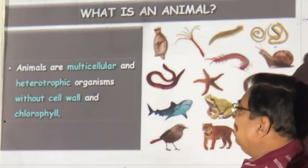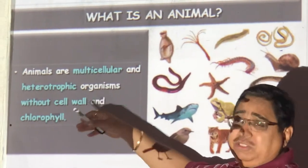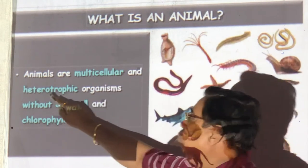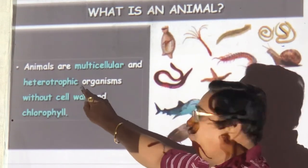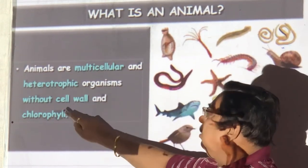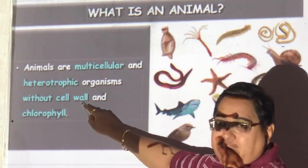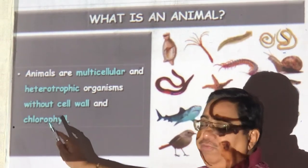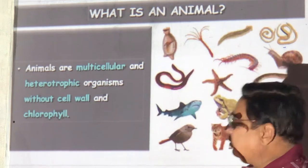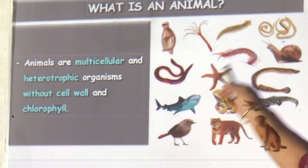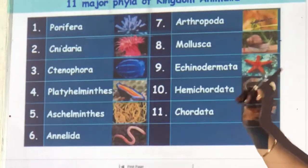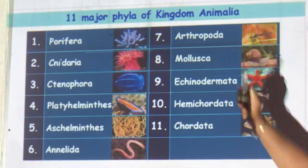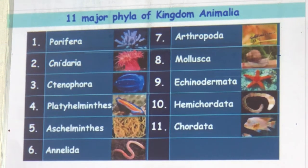What are animals? This is not textbook but revision. Animals are multicellular, do not prepare their own food, they don't have a cell wall, and they don't have chlorophyll — they can never do photosynthesis. We are going to study 11 phyla of the animal kingdom.